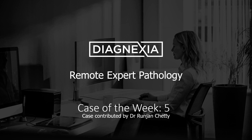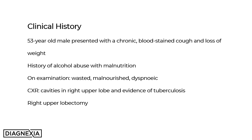Diagnexia Case 5. The clinical history in this particular case was of a 53-year-old male who presented with a chronic blood-stained cough with concomitant loss of weight. He had a history of long-standing alcohol abuse associated with malnutrition. On examination, the patient was wasted, malnourished, and dyspneic.